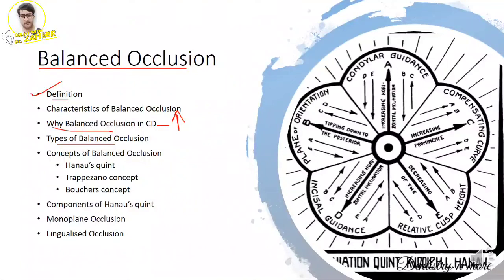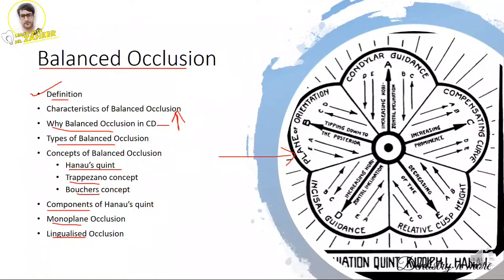The types of balanced occlusion are bilateral balance, unilateral balance, and the monoplane concept. Coming to the concepts of balanced occlusion, Hanao's concept describes five components: condylar guidance, incisal guidance, cuspal inclination, plane of occlusion, and compensating curves. After explaining Hanao's quint, write about the Trapezono's concept and Boucher's concept in brief.